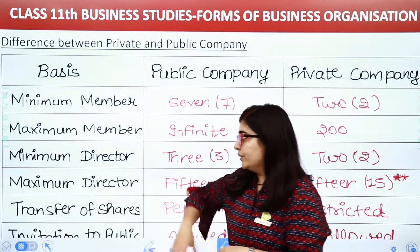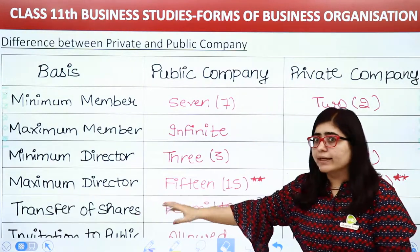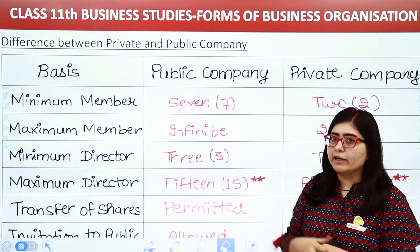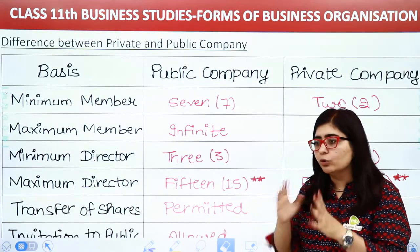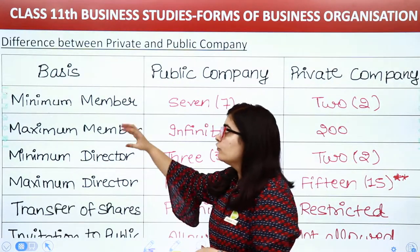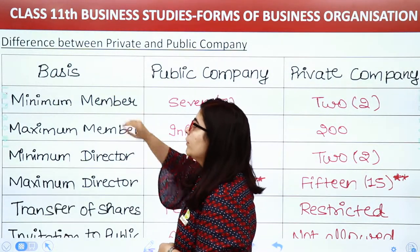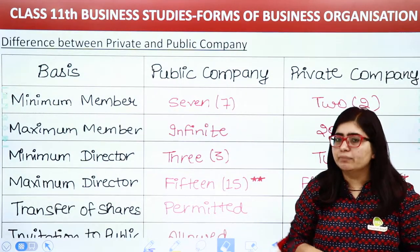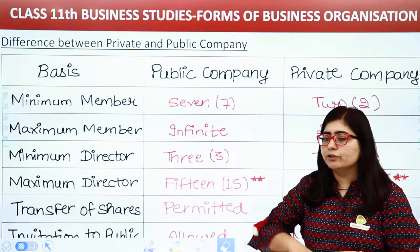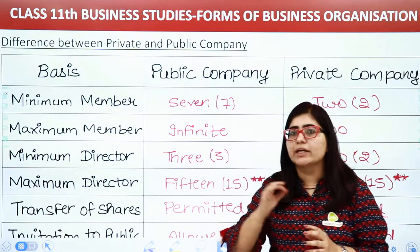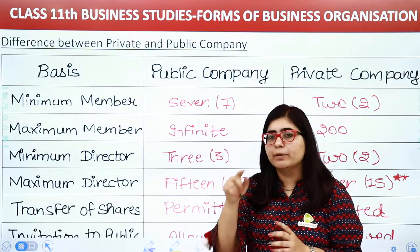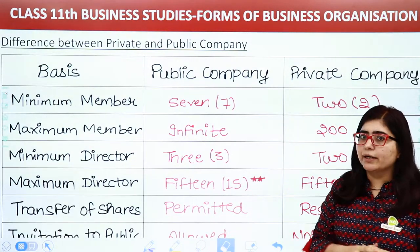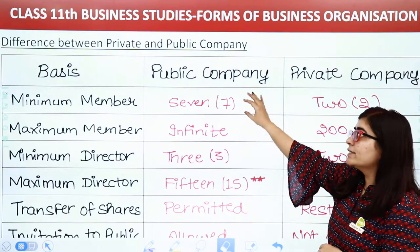We will bifurcate and differentiate them on various bases. First is minimum members. If you have to start a public company, then you need a minimum number of members to start that company, and that is 7.